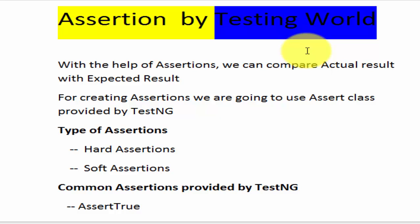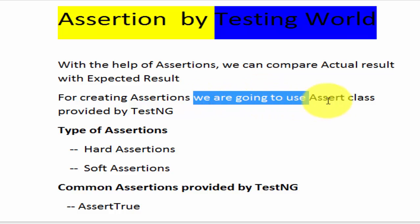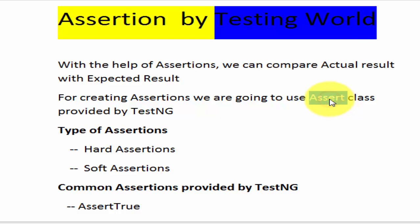To compare actual result with expected result — to make an assertion — TestNG already provides a class; the name of the class is Assert. We are going to use this class and the methods of this class to compare actual and expected results.